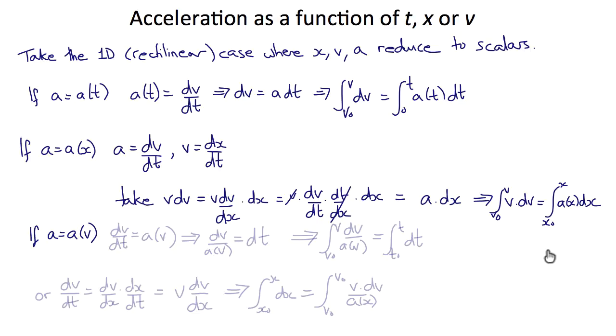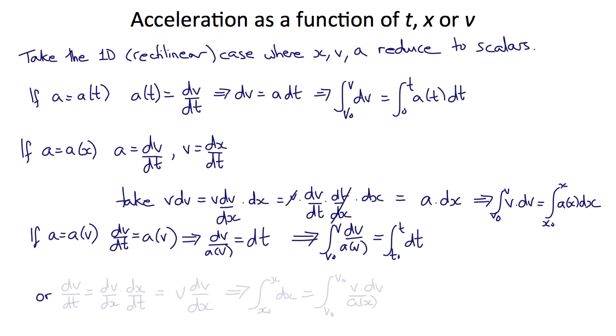If we have acceleration as a function of v, we can do something similar. We make use of the fact that dv/dt equals a, now a function of v, which gives us that dv over a(v) equals dt. Integrating that gives us that the integral from v naught to v of dv over a(v) equals the integral from t naught to t of dt.